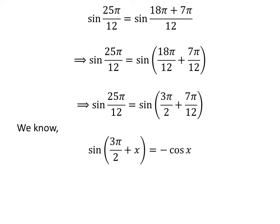We know the trigonometric identity: sine of 3 times pi upon 2 plus x is equal to minus cosine of x. The proof of this identity is explained in the video appearing in the upper right corner, and the link is also given in the description section.